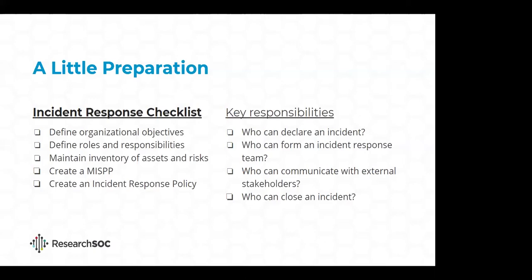Once you have those three items, you can start to put together what we call a master information security policies and procedures document. This is the core of your information security platform. If you need help doing this, Trusted CI has created a very helpful guide at trustedci.org/guide. Once you have your master information security policy written, you can start to use that to draft your incident response playbook and policy.